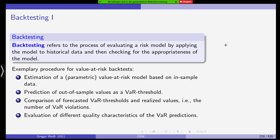Backtesting is the process of evaluating a risk model by applying the model to historical data, checking for the appropriateness of the model. What we usually do, especially in value-at-risk backtesting, is you estimate a parametric value-at-risk model based on in-sample data. You predict out-of-sample values as a VAR threshold. Then you would compare the forecasted VAR thresholds and the actual realized losses. If you transform it into ones and zeros into an indicator variable, you would calculate the number of VAR violations and the sequence of VAR violations. Then you perform a statistical test whether the sequence of indicator variables has the desired properties.